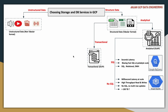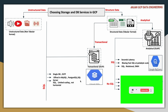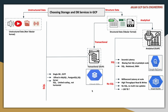Coming to transactional use cases — that means data which can undergo very frequent updates or changes — you will go for these types of services, again based on certain parameters. For example, if you need a relational database offered in different flavors such as MySQL, PostgreSQL, or SQL Server, and you are expecting a single database which can store up to a few terabytes of data, and you are not expecting horizontal scalability. There is a concept called vertical scaling and horizontal scaling. Vertical scaling means you improve internal memory (RAM), storage (disk), or computing capacity (CPU).